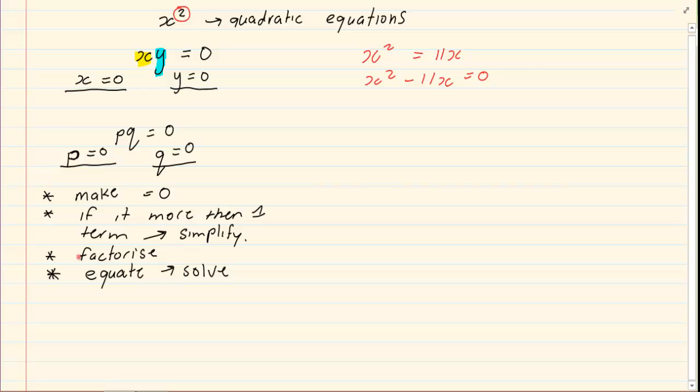Now factorizing has five basic rules: take out a common, trinomials, difference of two squares, cubes, and grouping. This rule we're going to work with is take out a common. So I'm left with x(x minus 11). Once we have this, now we're going to equate. The rule says make the first part equal to 0, make the second part equal to 0. So therefore, x would equal 0 and x minus 11 is equal to 0.